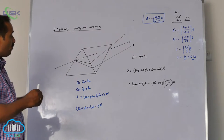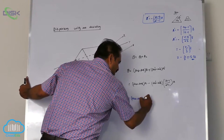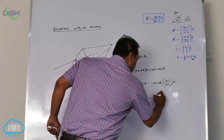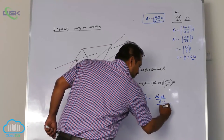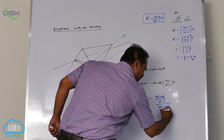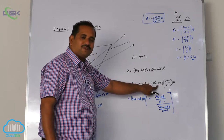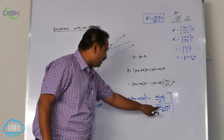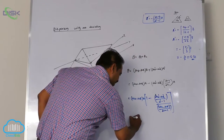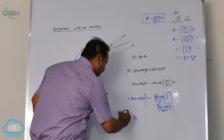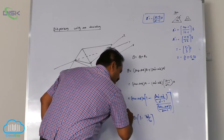Taking (mu_V minus mu_R) times A as common, the expression becomes: theta equals (mu_V minus mu_R) times A multiplied by 1 minus [(mu_V dash minus mu_R dash) divided by (mu dash minus 1)] times [(mu minus 1) divided by (mu_V minus mu_R)]. This simplifies using dispersive power: theta equals theta one times (1 minus omega dash divided by omega).